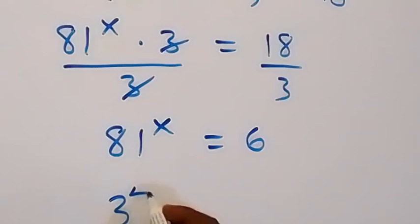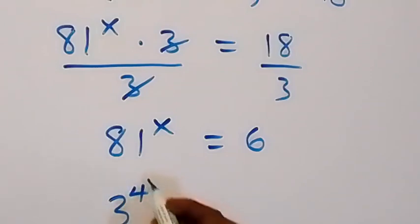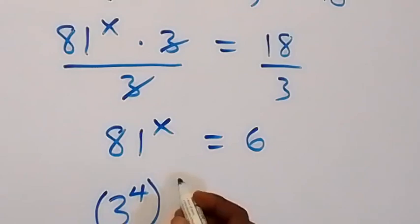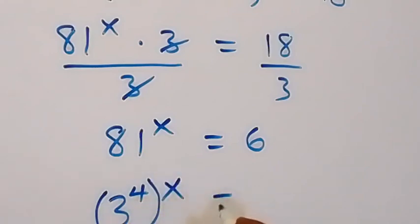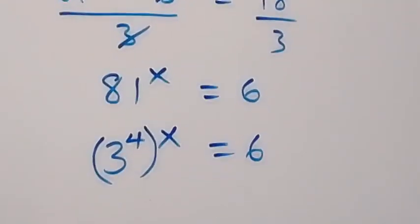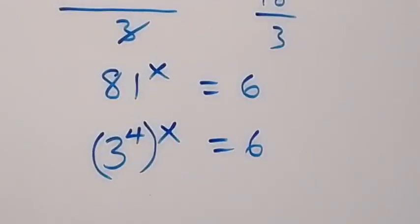Then let's write 81 as 3 raised to power 4 — that is 3 multiplied by itself 4 times — so we have 3 raised to power 4x equals 6.